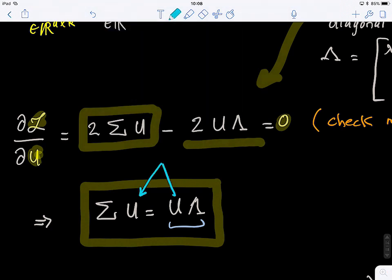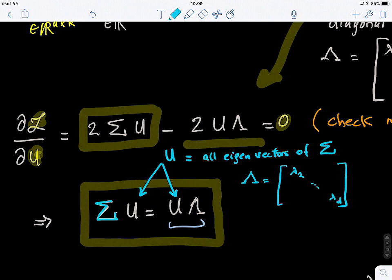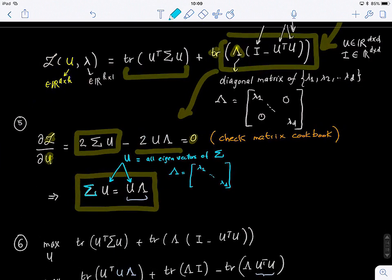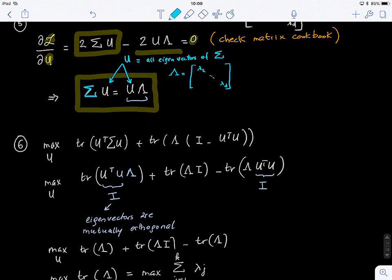And this basically is the compact form that includes all the eigenvectors that we're looking for. So this means that the matrix U basically contains all eigenvectors of sigma, and lambda is basically their associated eigenvalues. So this is solving the primal problem.